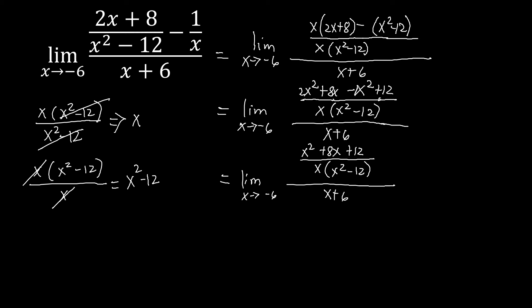We can multiply the numerator by the reciprocal of the denominator to get a single fraction. So we have the limit of (x squared plus 8x plus 12) over x(x squared minus 12), times the reciprocal of (x plus 6). The denominator x plus 6 is understood with 1 here, so the reciprocal is 1 over (x plus 6).